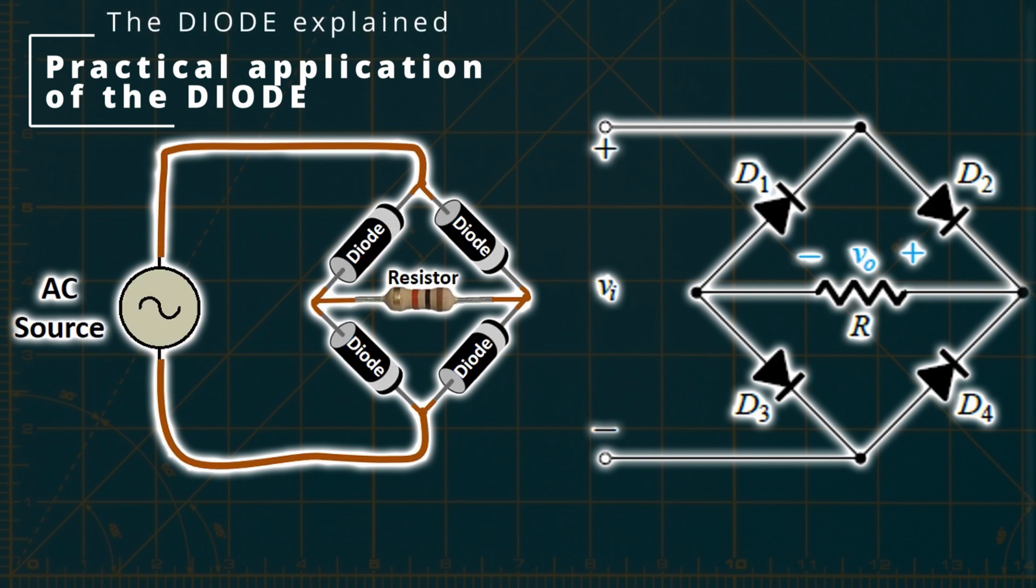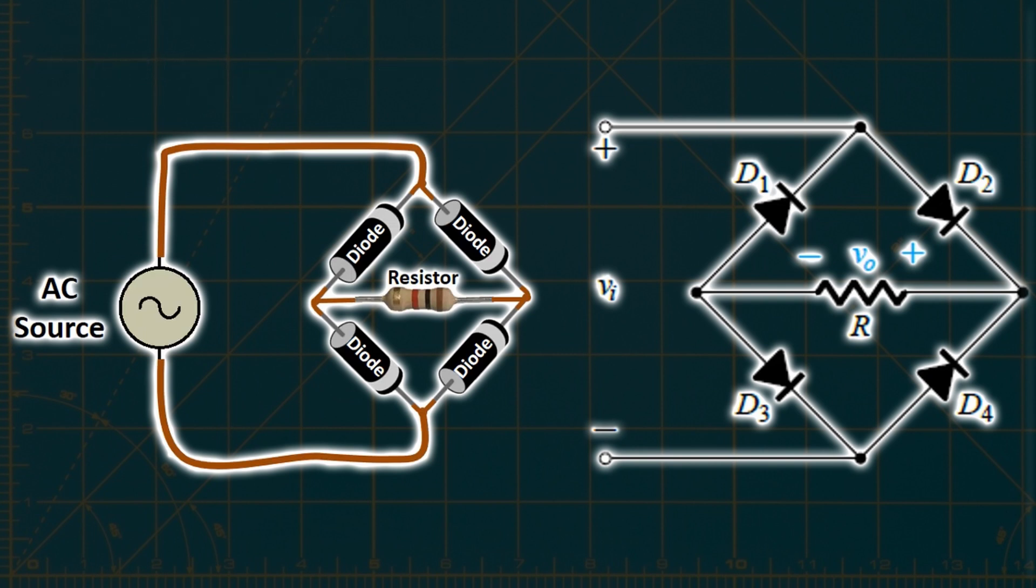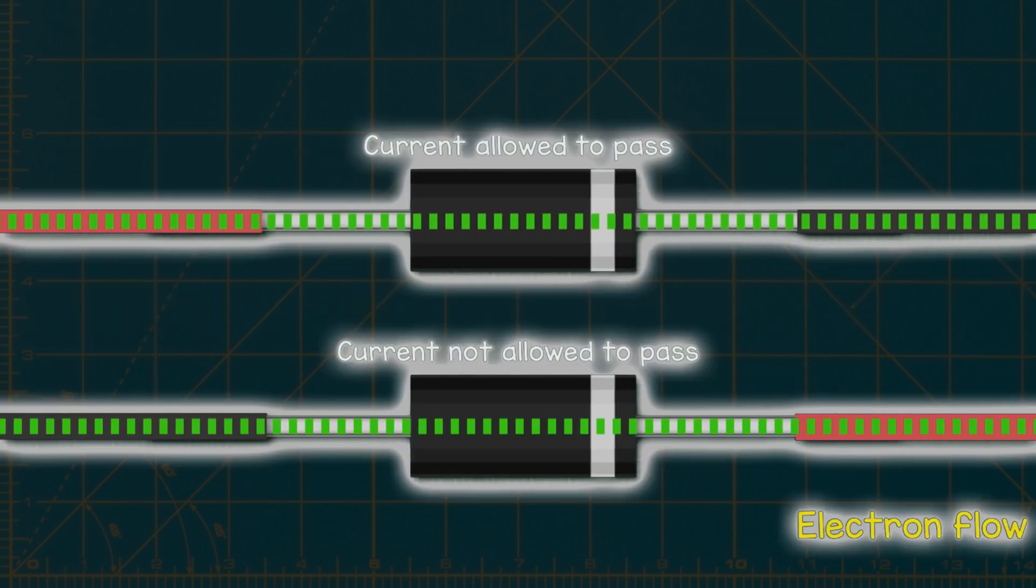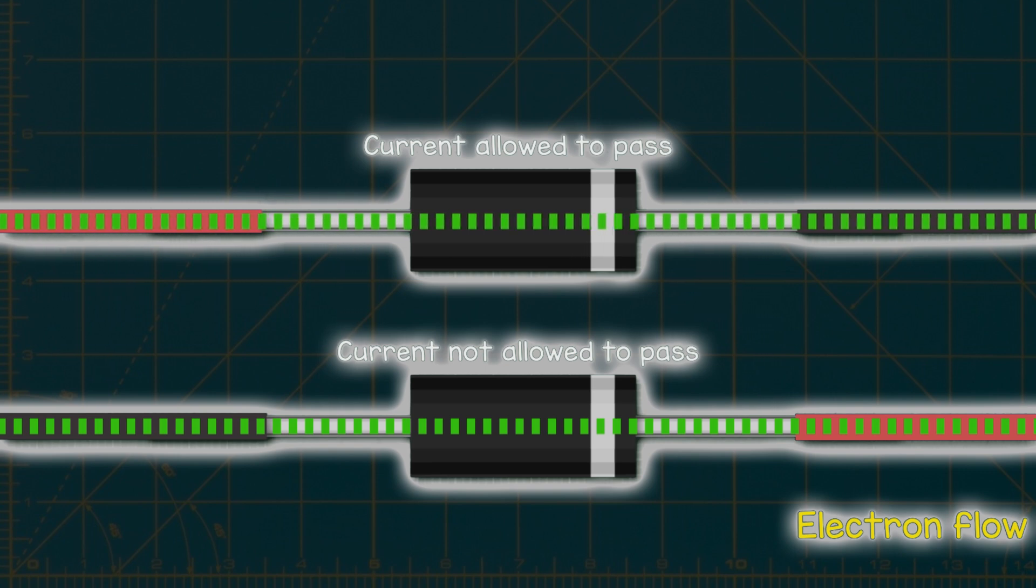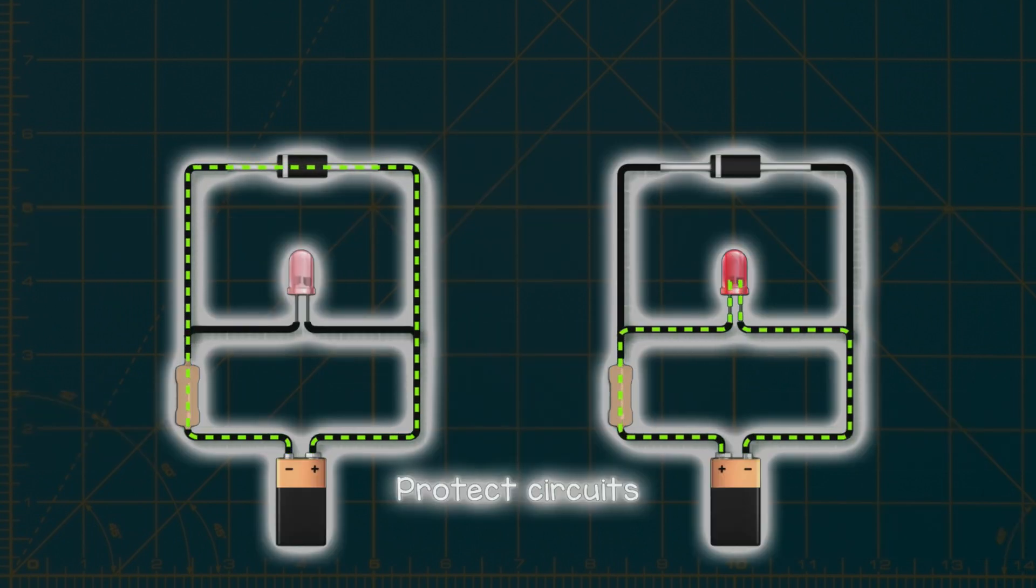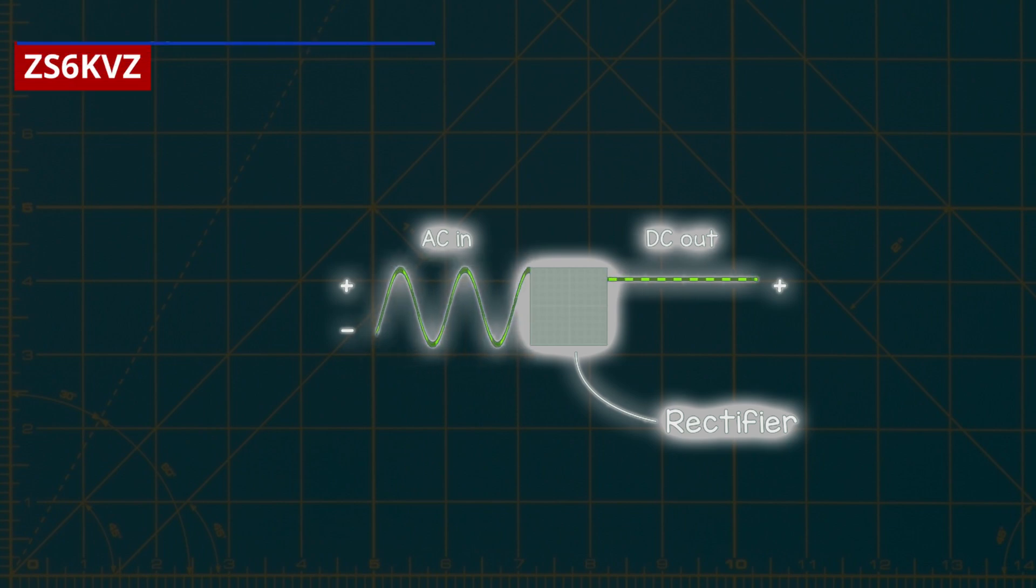Diodes find applications in various areas of electronics. One common use is in bridge-type full-wave rectifier circuits, which are commonly found in power sources and adapters. As mentioned earlier, diodes are employed to control the direction of current flow on a circuit. This feature proves useful in various applications. For instance, diodes are utilized to safeguard our circuitry in cases where the power supply is connected in reverse. By blocking the current, the diode ensures the safety of our components. Another purpose of diodes is the conversion of alternating current (AC) to direct current (DC).